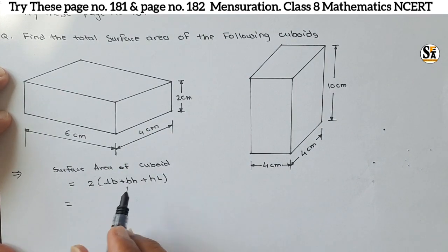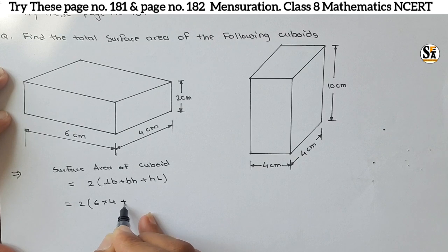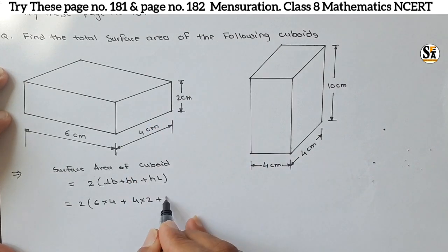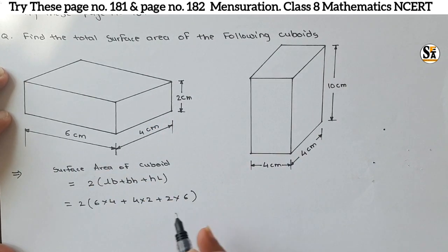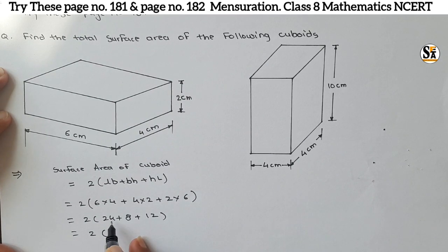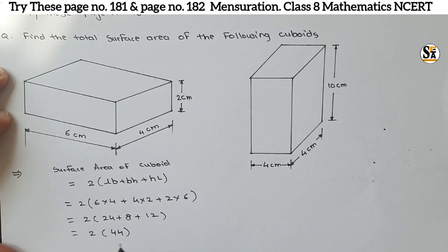For the first cuboid, length is 6, breadth is 4, height is 2 centimeters. So: 2 into bracket (6×4) + (4×2) + (2×6) = 2 into bracket 24 plus 8 plus 12. That gives 2 into 44, so the answer is 88 centimeters square.